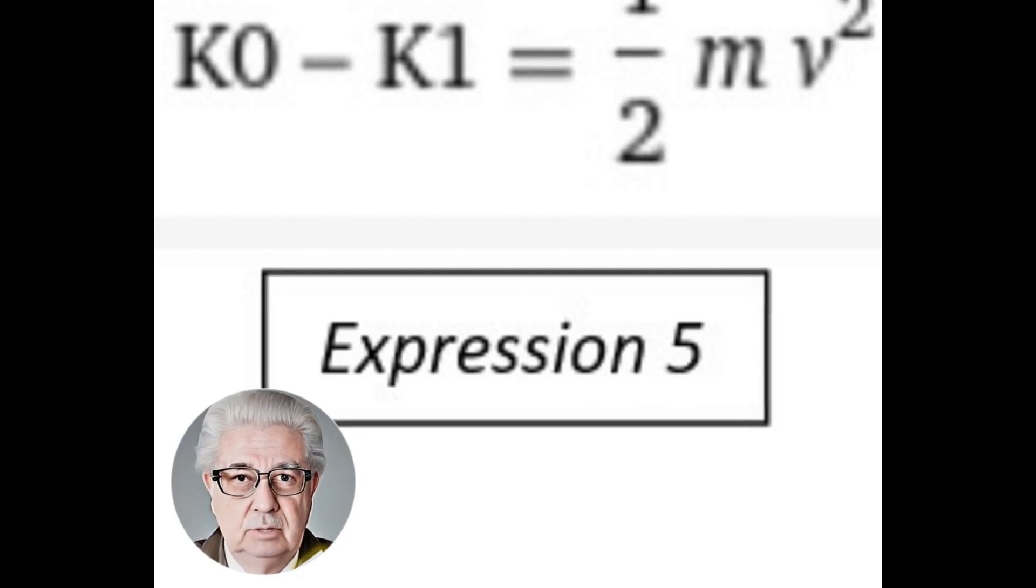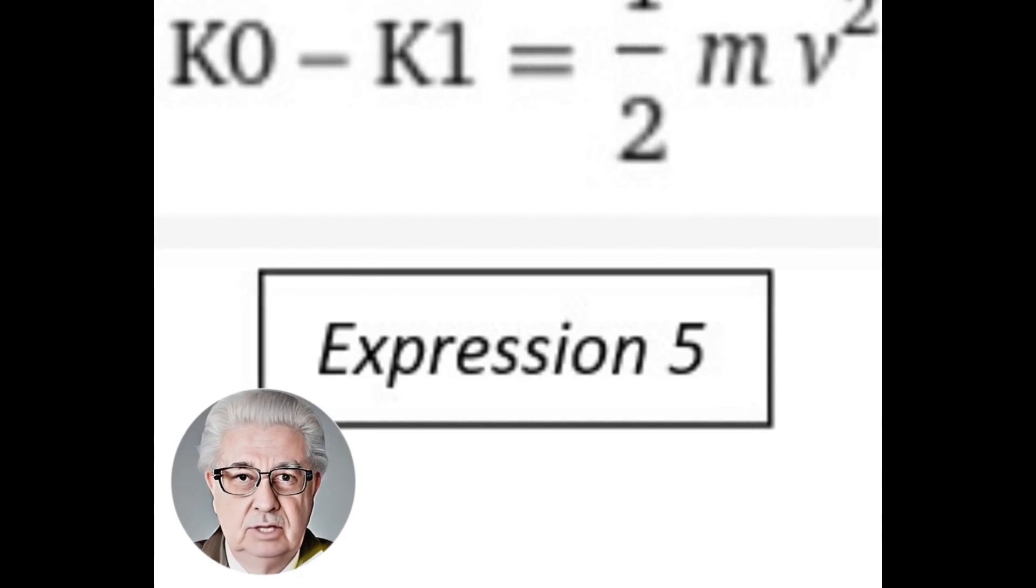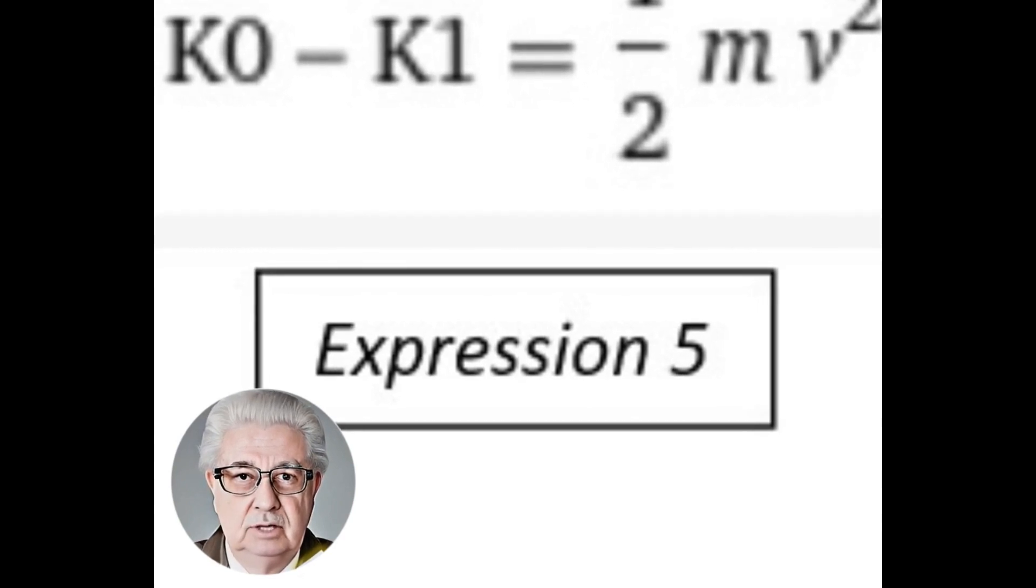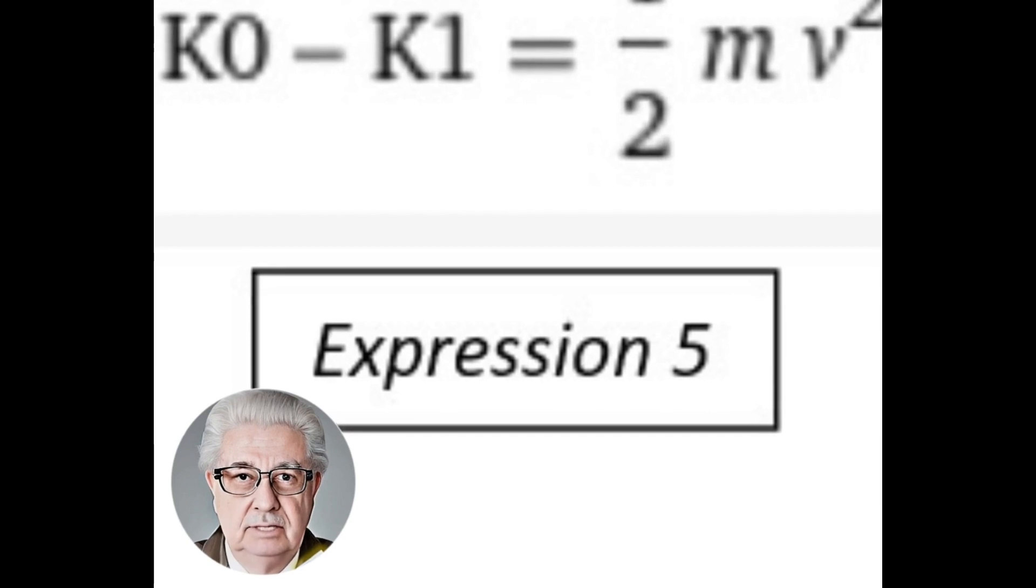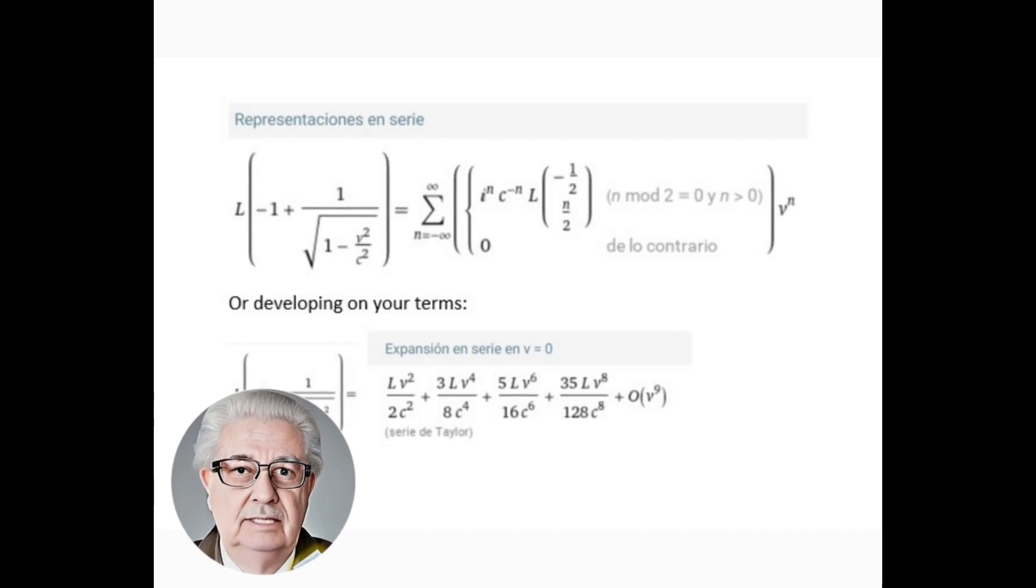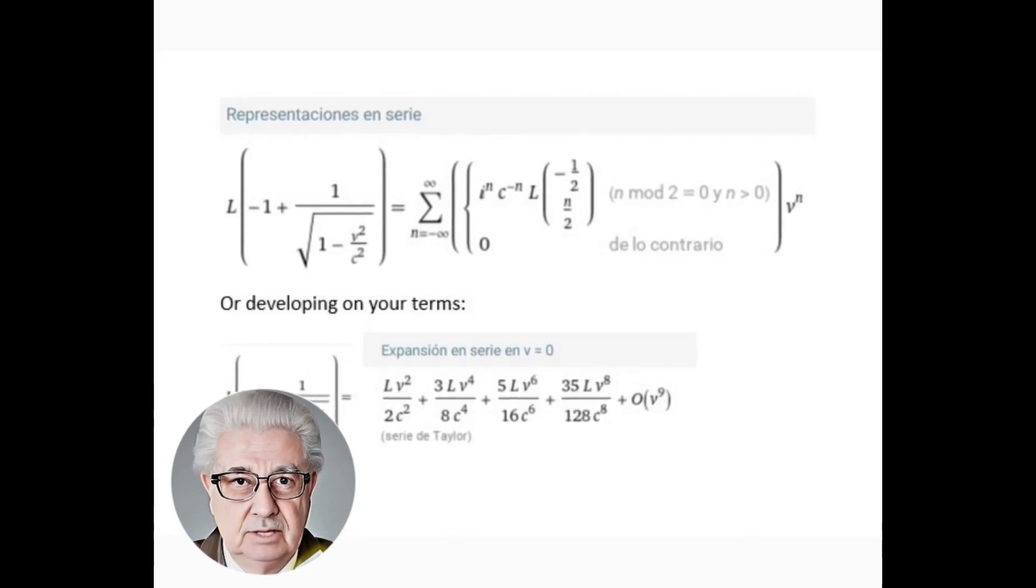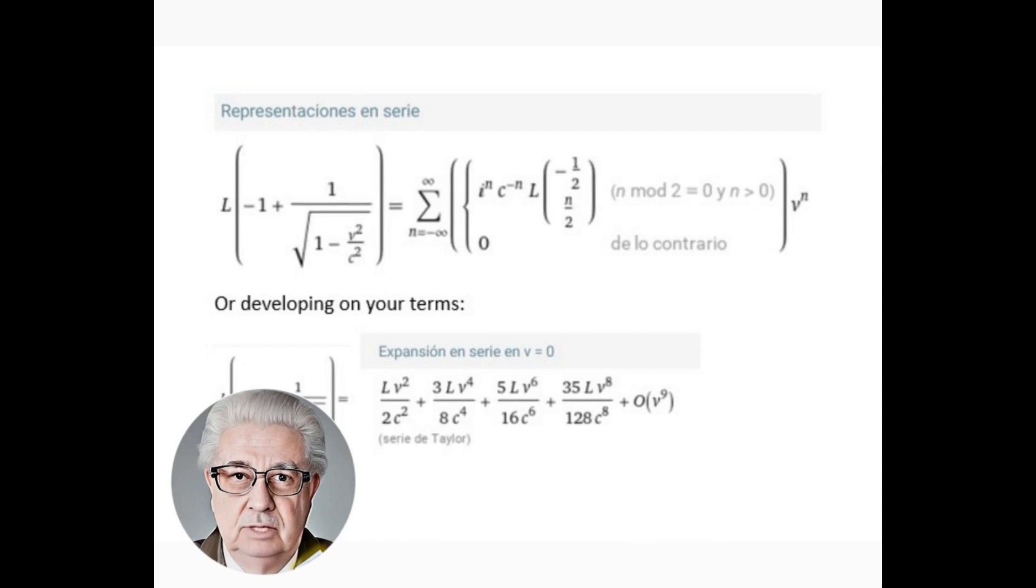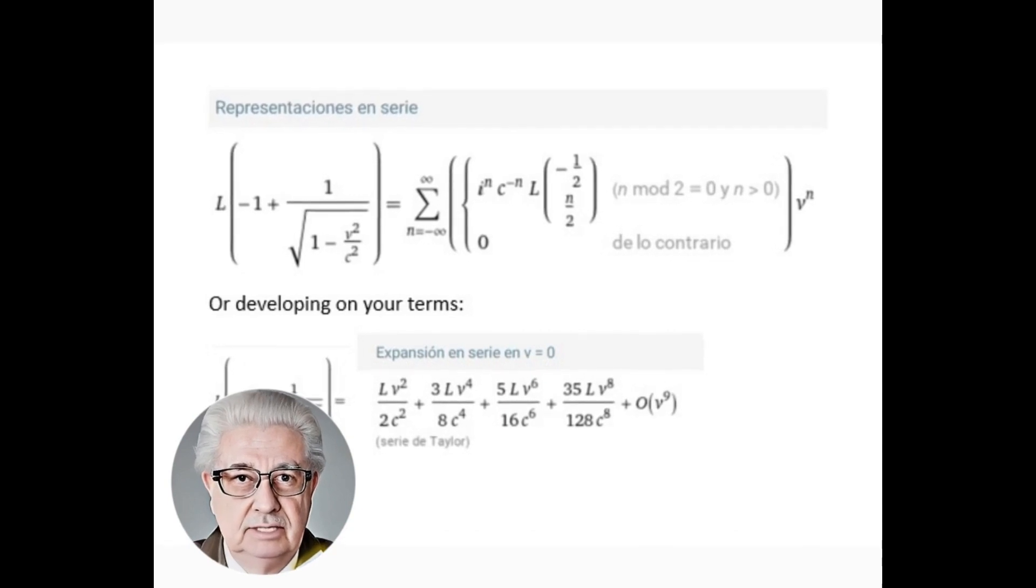However, this expansion will only be valid within an interval in which the function is sufficiently smooth and where the velocity v is much less than the speed of light. What would be the exact first terms of that Taylor series expansion? This expansion can be used to obtain appropriate approximations for certain values of velocity.